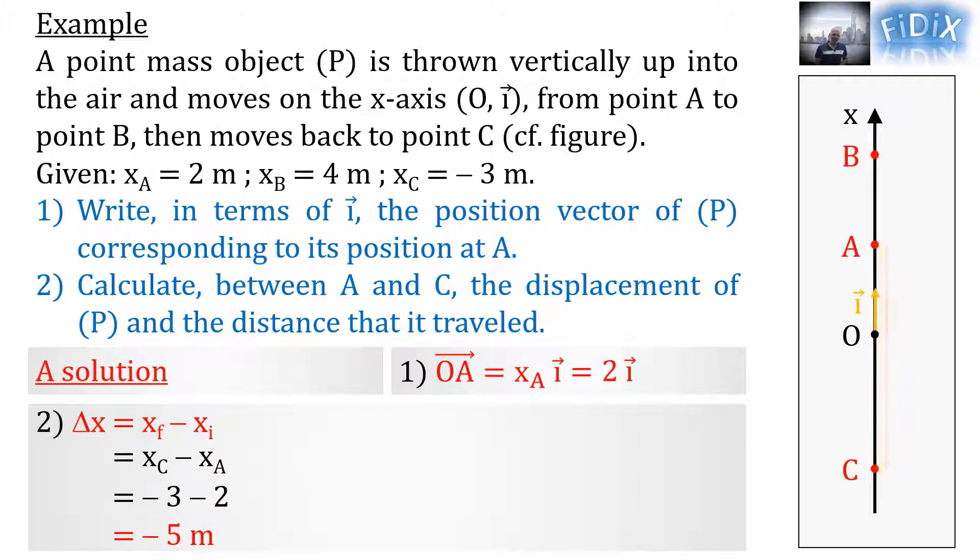To calculate the distance traveled, we should divide the movement into several phases, each phase corresponding to a movement in a single direction. Thus in our case, the distance traveled by the object between A and C is equal to that traveled between A and B plus that traveled between B and C. Note that in a unidirectional movement, the distance traveled between two points is the absolute value of the difference between the abscissas of these points.